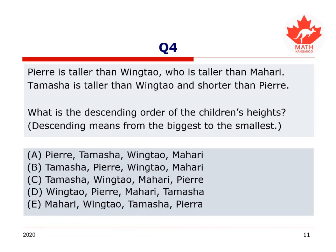Another question. Pierre is taller than Wing Tau, who is taller than Mahari. Tamasha is taller than Wing Tau and shorter than Pierre. What is the descending order of the children's heights? Descending means we're going from the biggest to the smallest — from the tallest person to the shortest. Take a second, perhaps draw some pictures, pause the video, and then hit play again to listen to the solution.